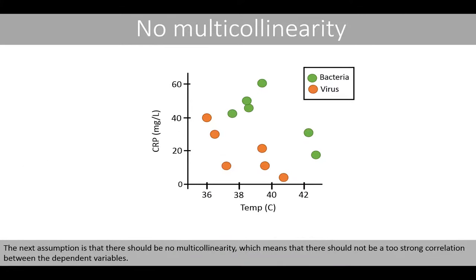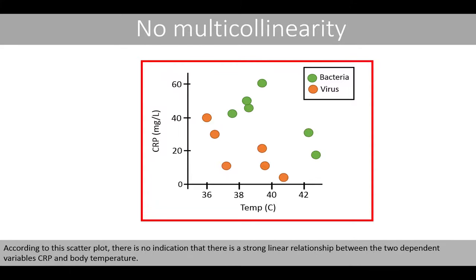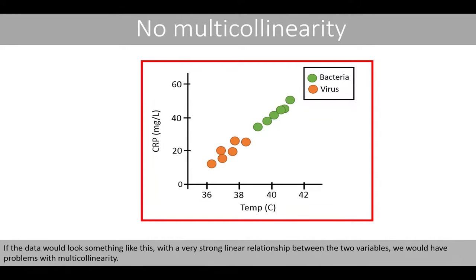The next assumption is that there should be no multicollinearity, which means that there should not be too strong a correlation between the dependent variables. According to this scatter plot, there is no indication of a strong linear relationship between the two dependent variables, CRP and body temperature. If the data showed a very strong linear relationship between the two variables, we would have problems with multicollinearity.